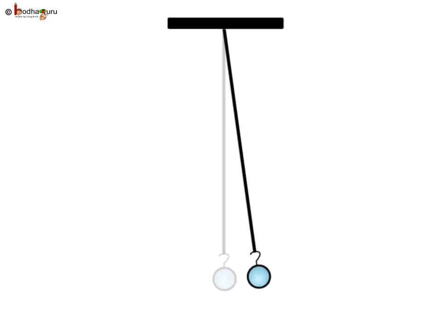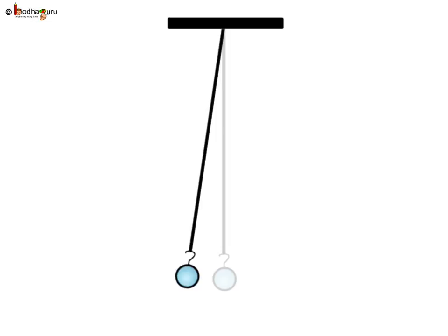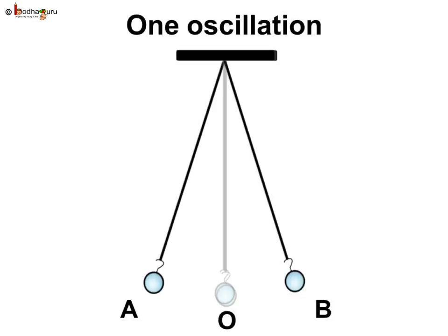to B and back to O. The pendulum also completes one oscillation when its bob moves from one extreme position A to the other extreme position B and comes back to A. The time taken by the pendulum to complete one oscillation is called its time period.